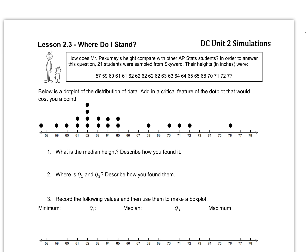So here's a dot plot of the distribution. It says add in a critical feature of the dot plot that would cost you a point. What's missing? There's something else too.